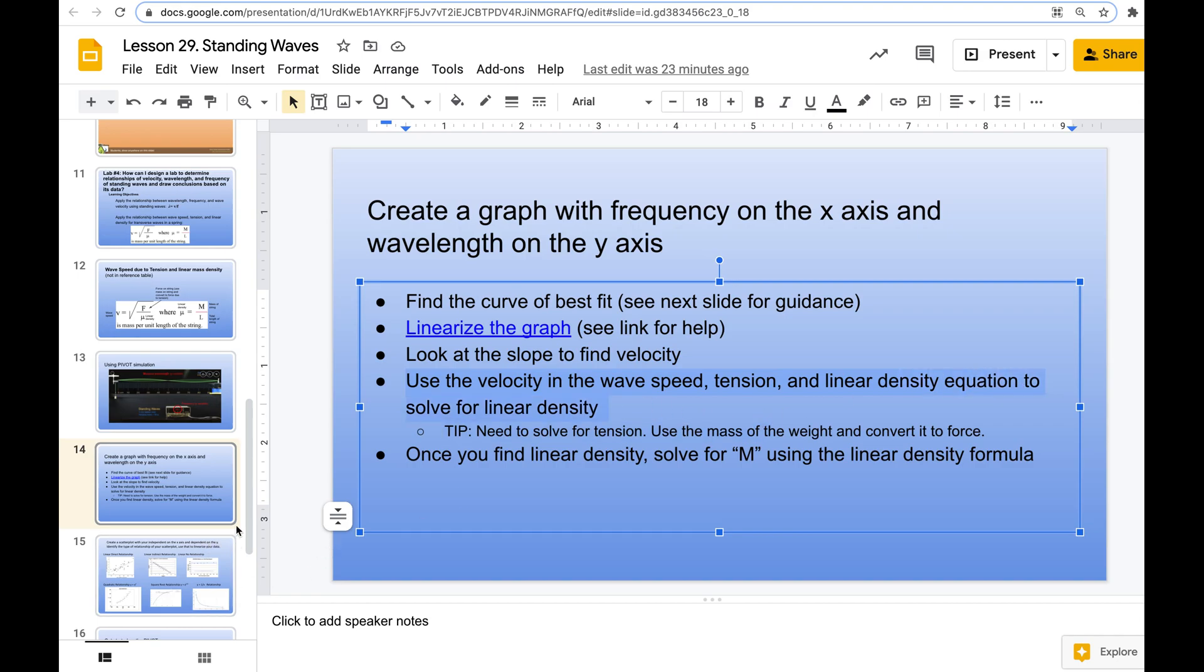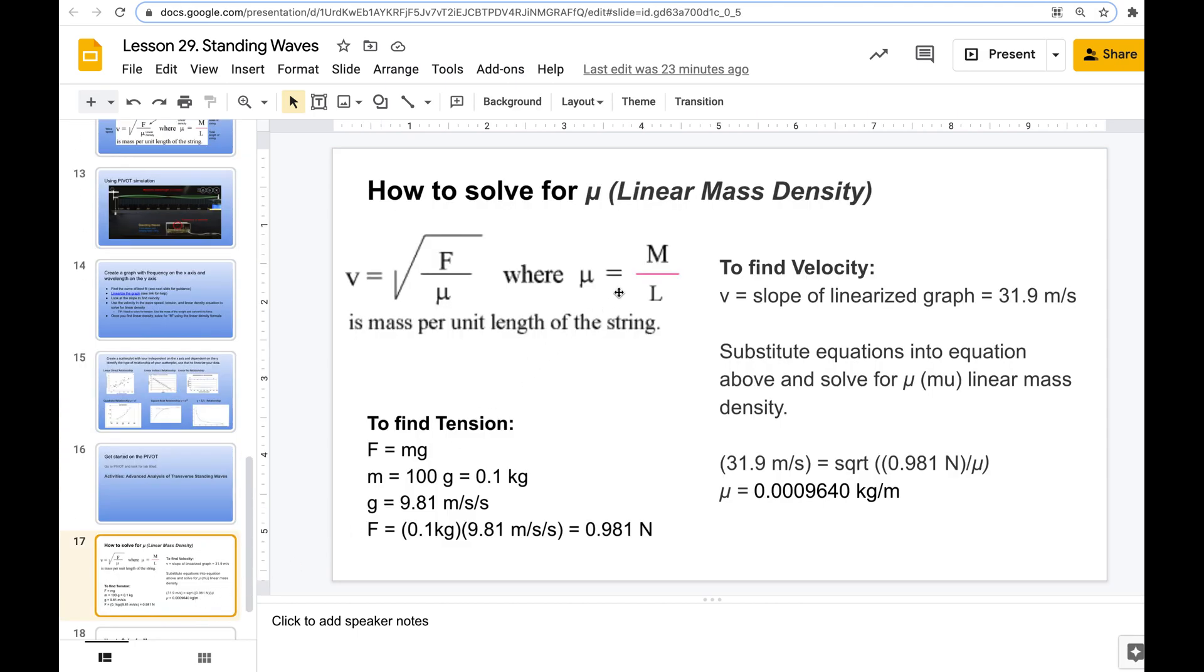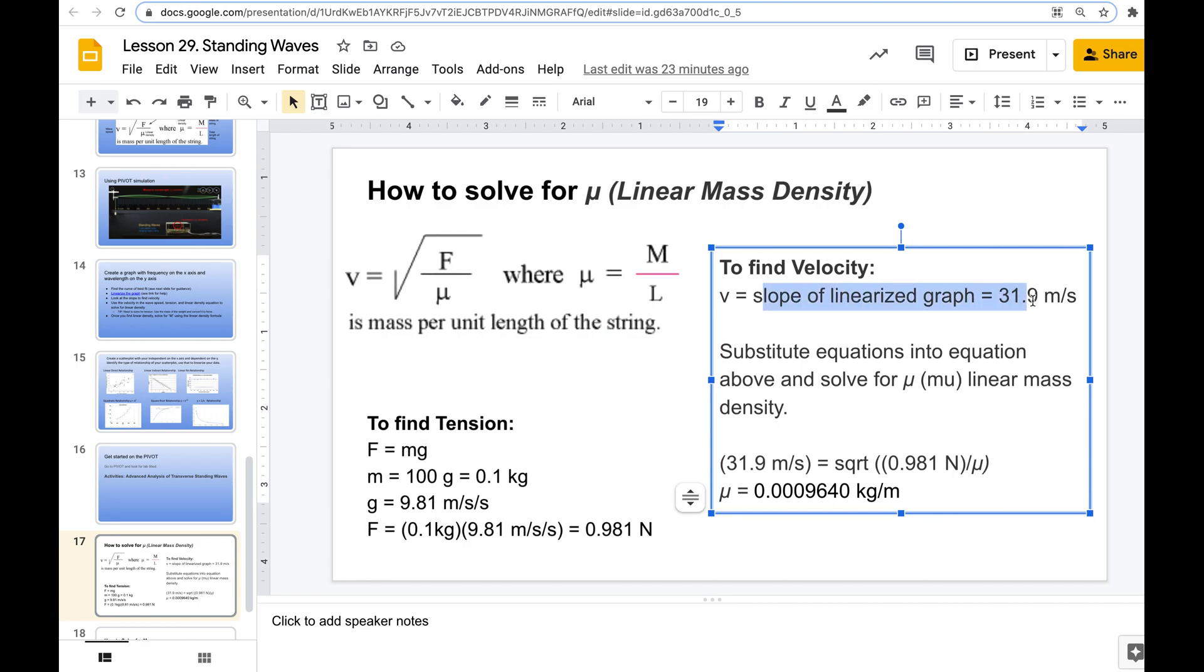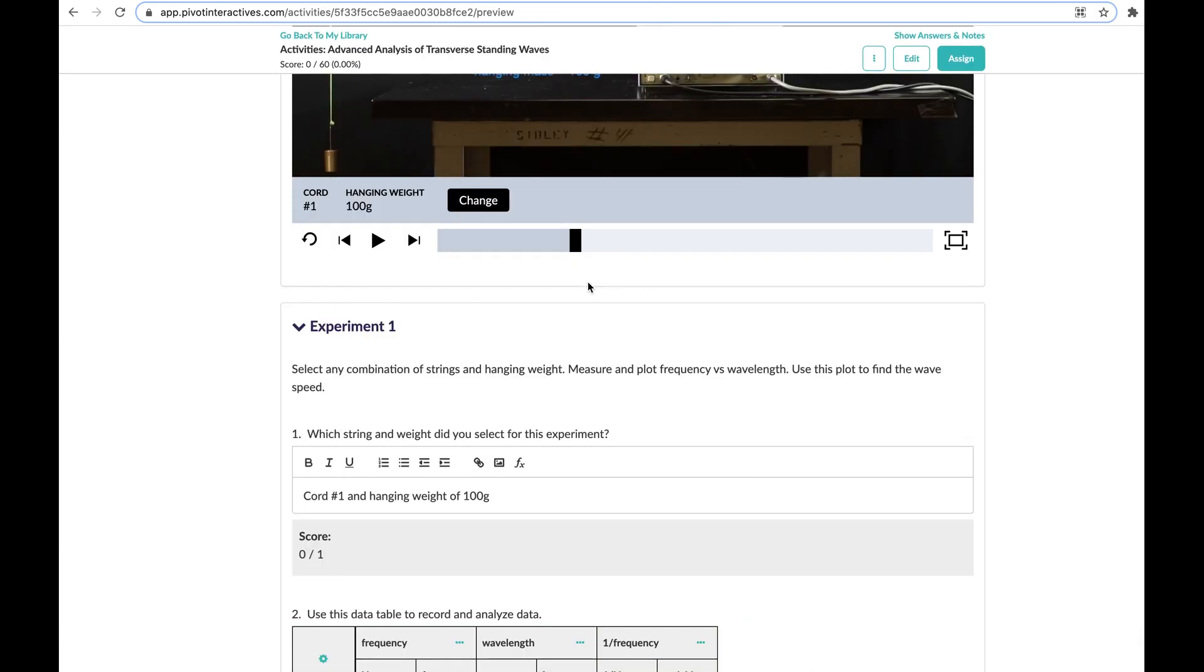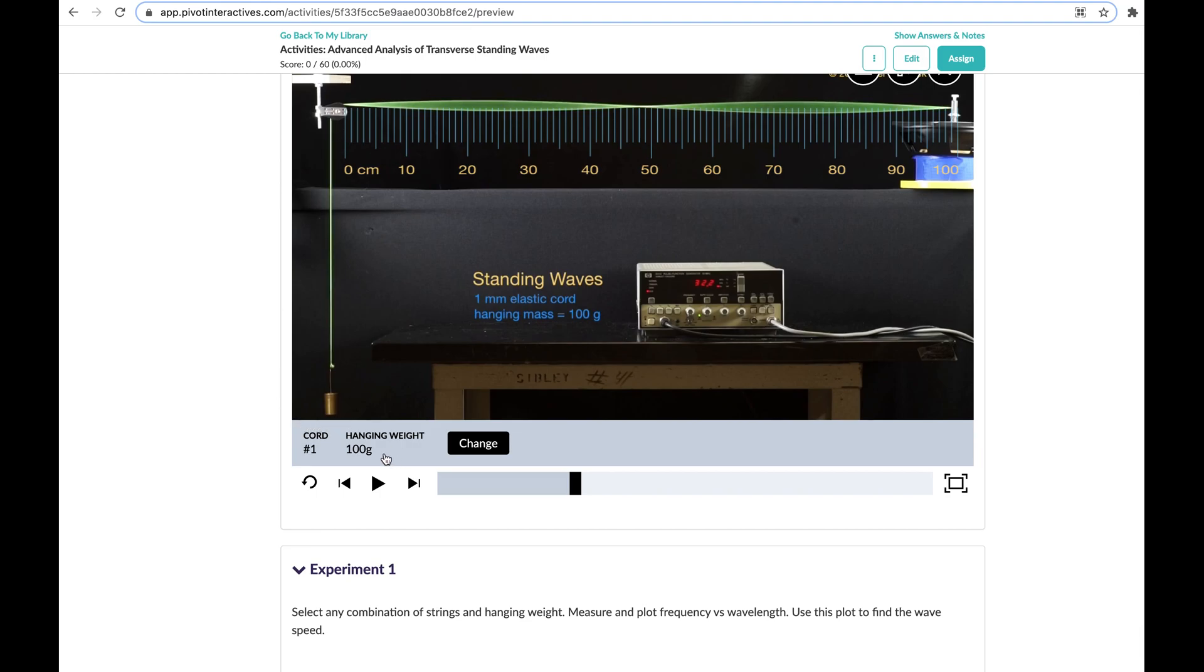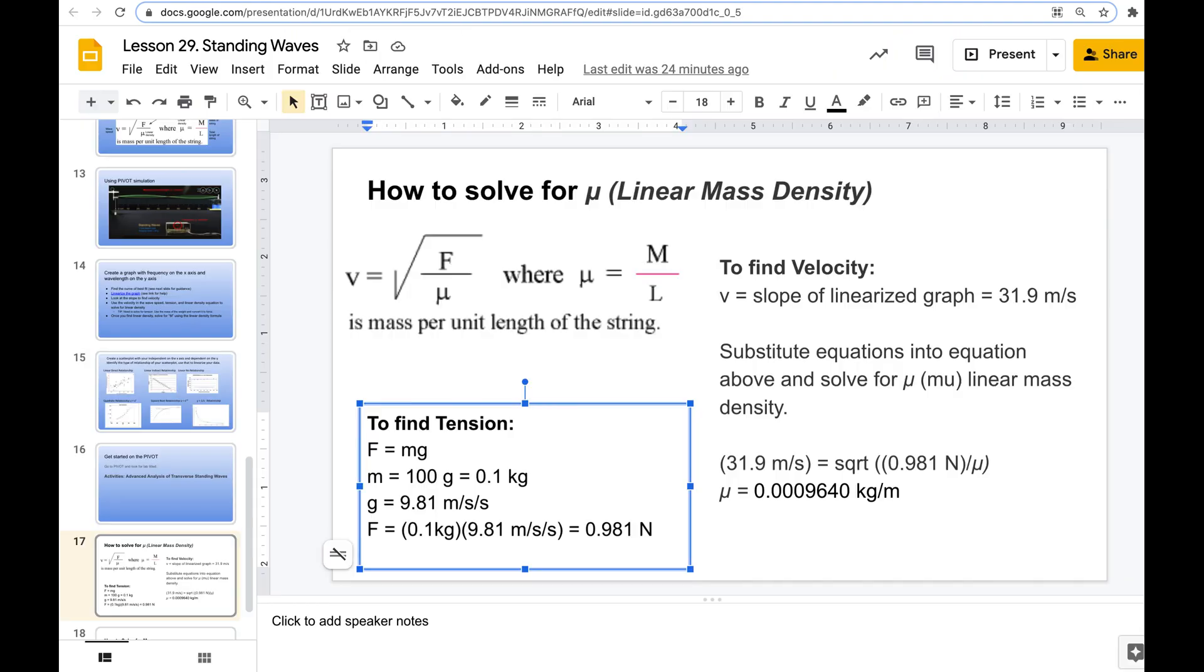Now we need to use the wave speed tension linear density equation to solve for linear density. All right. So how to solve for linear density? We're going to use this equation. We know the velocity because we found that from our linearized slope. But the force, we don't know. So we need to find the tension in the force. So we're looking to solve this tension right here. So we know the hanging weight is 100 grams. So we're going to use that force equation, mass times gravity, to give us the force and the tension of the rope. So 100 grams converts to 0.1 kilograms. Gravity is 9.81 meters per second squared. We're going to multiply those two numbers together and get our force of 0.981 newtons for this specific example.